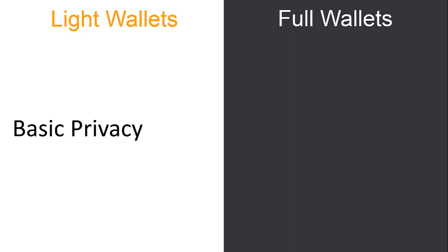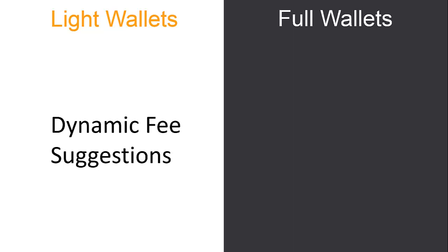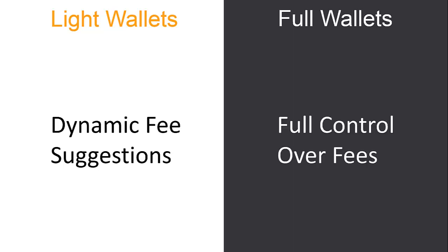Because light wallets depend on third parties, their privacy is more basic, whereas full wallets have improved privacy since they don't depend on any third party. In light wallets, you have dynamic fee suggestions — the wallet suggests fees based on network congestion. In full wallets, you have full control over fees: you can set a higher fee for faster confirmation, or a lower fee if the transaction urgency is low.